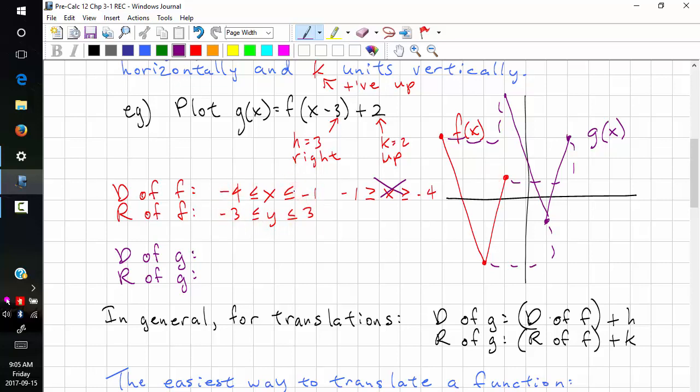Without being given the graph and just being given this, we can calculate the domain range of g. All we have to do is add these translations. So we add 3 to here, this is negative 1. We add 3 to this one, and that's 2. We're going up 2, so we add 2 to this, this is negative 1. And we add 2 to this, and we get 5. We can check this with the graph we just made. This is negative 1, this is 2 for the domain. And we have negative 1 for the range, and 5 for the range.